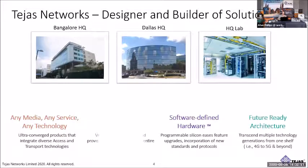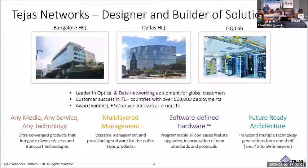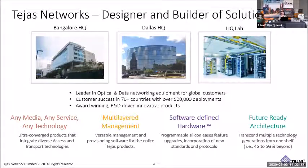Tejas Networks is headquartered in Bangalore, India. We have a headquarters in Dallas in the US, but we're in over 70 countries around the world. We have 500,000 network elements deployed, and we consistently are capable and able to deliver fast 100 gig capabilities to your network.